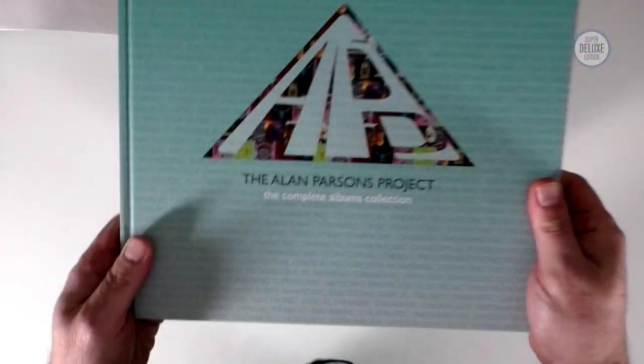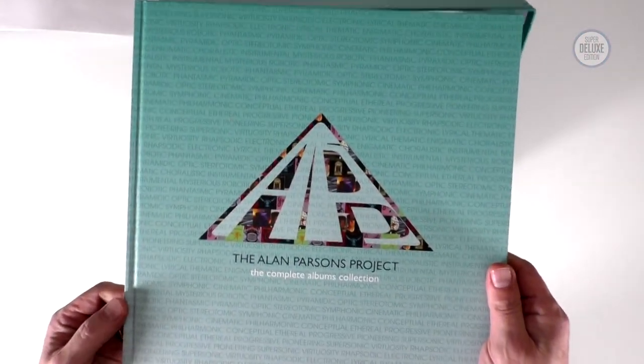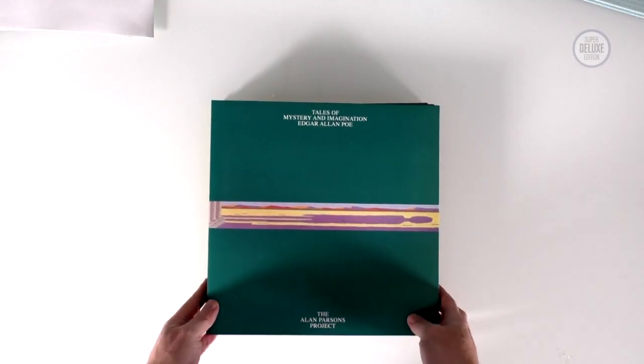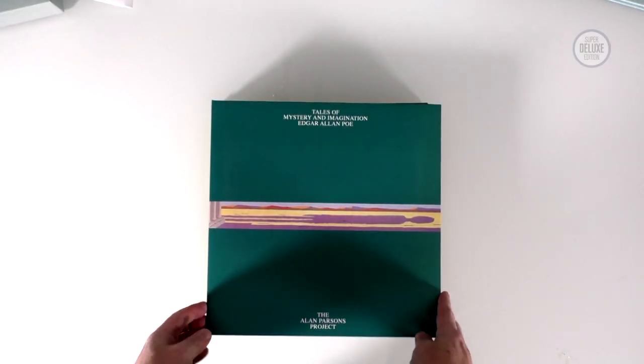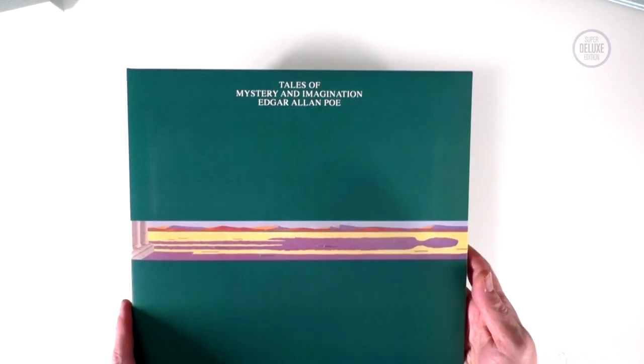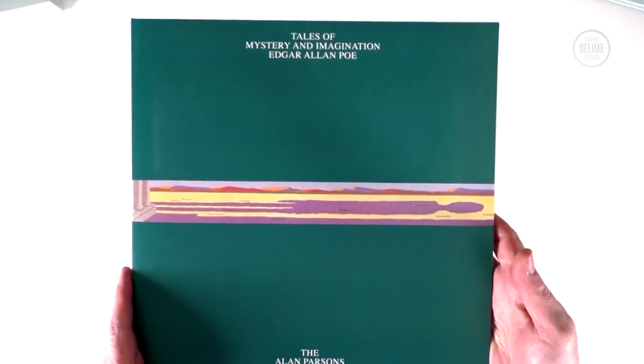And then, one of the significant appeals of this box set is this book. So we'll have a look at this at the end. But first of all we're going to go through all the vinyl records. Here we go then, one by one. Starting with the first record, 1976 is Tales of Mystery and Imagination, Edgar Allan Poe.